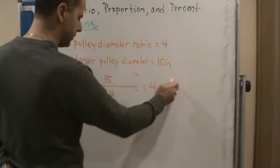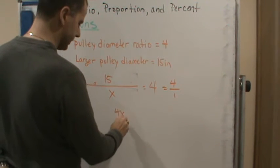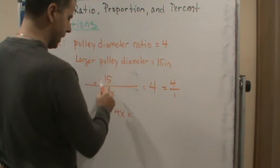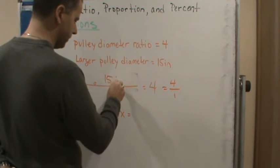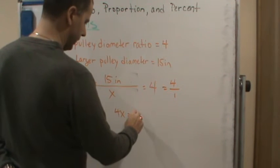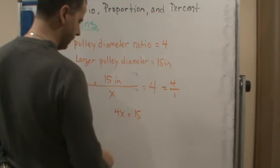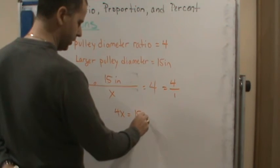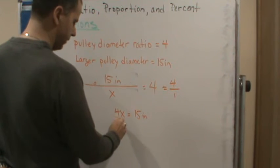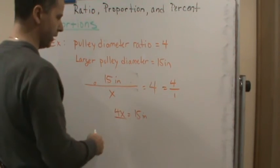If we cross multiply, x times 4, we get 4x equals 1 times 15 inches, so we get 15 inches. And of course, the units are inches, and the 4 is unitless—there's no units for the ratio.